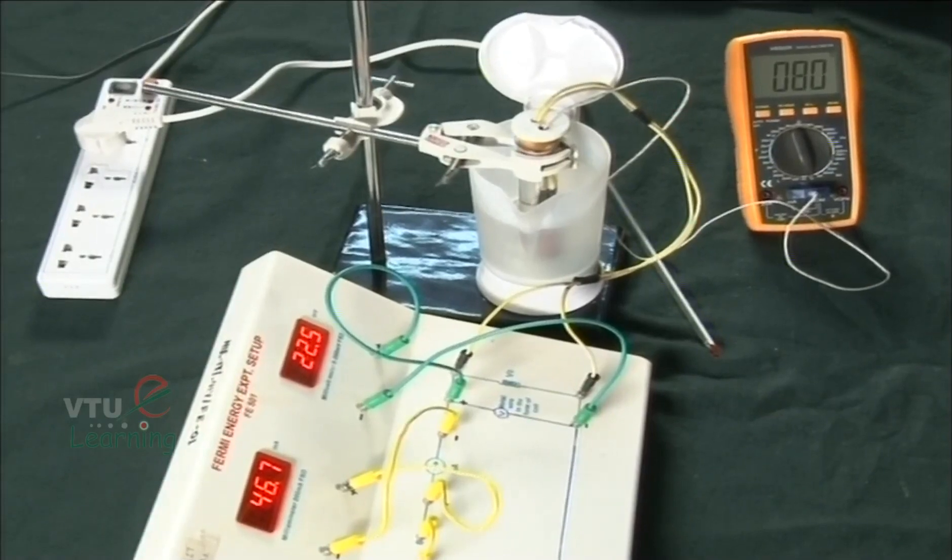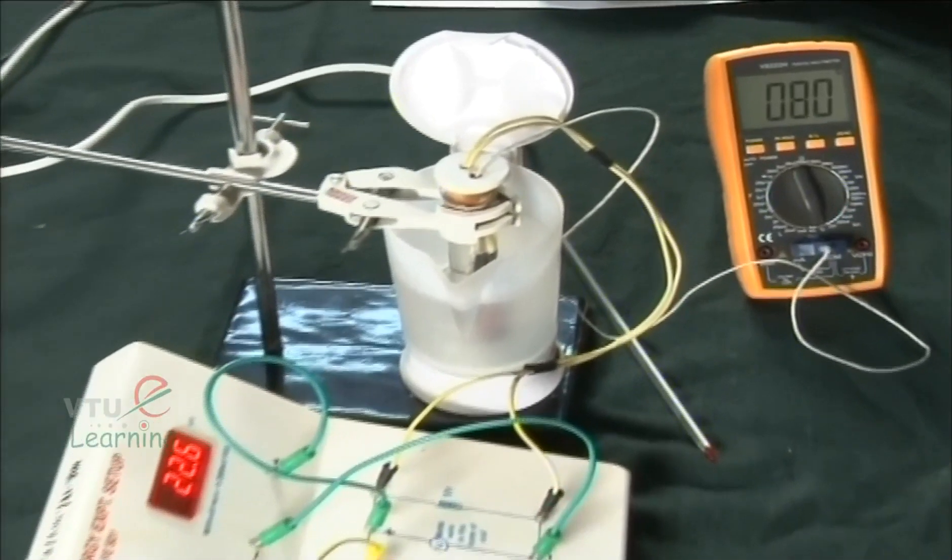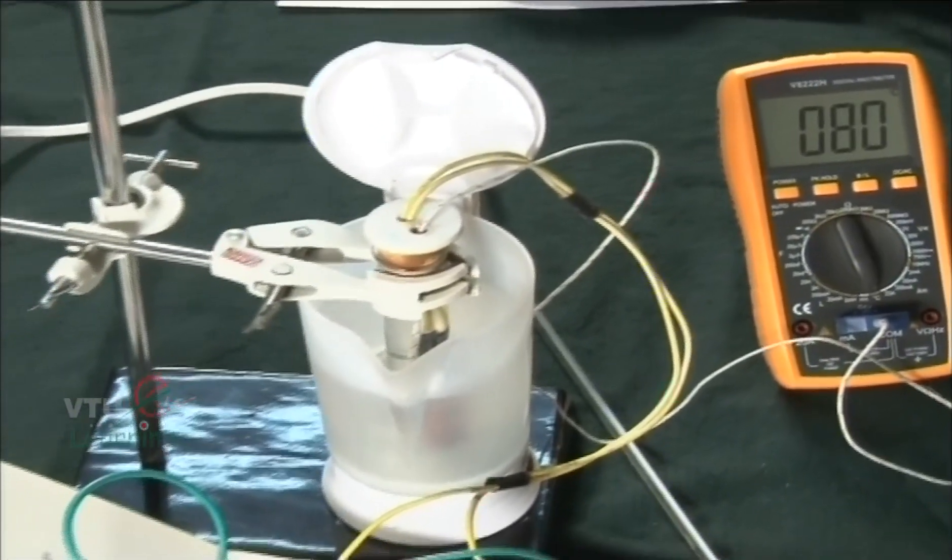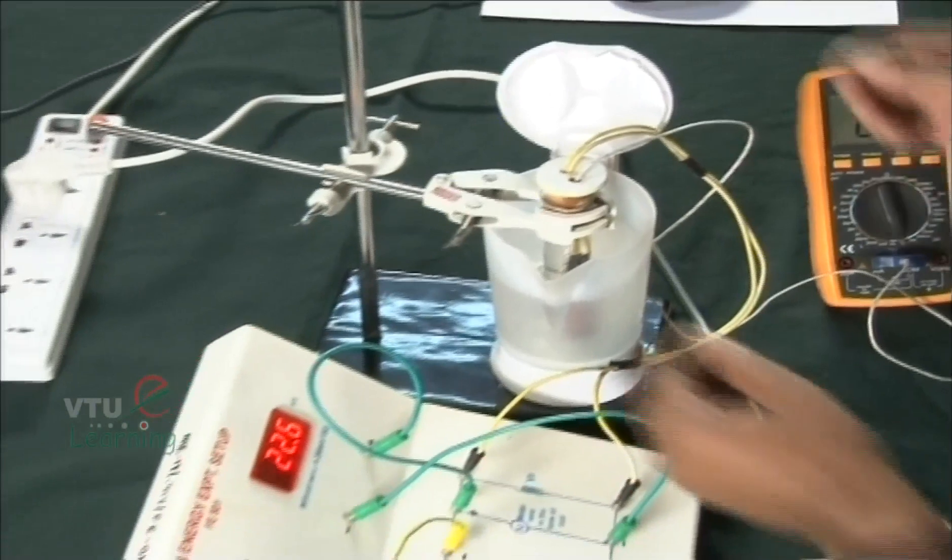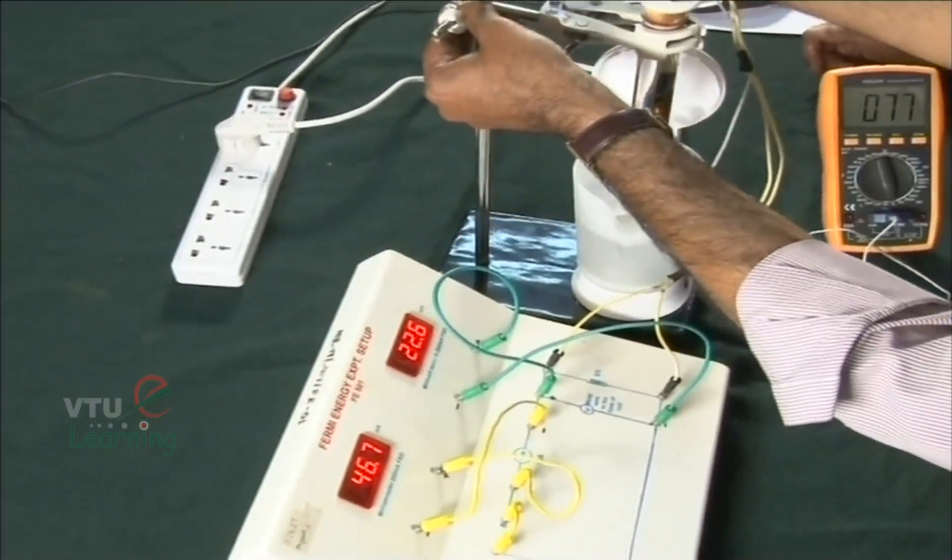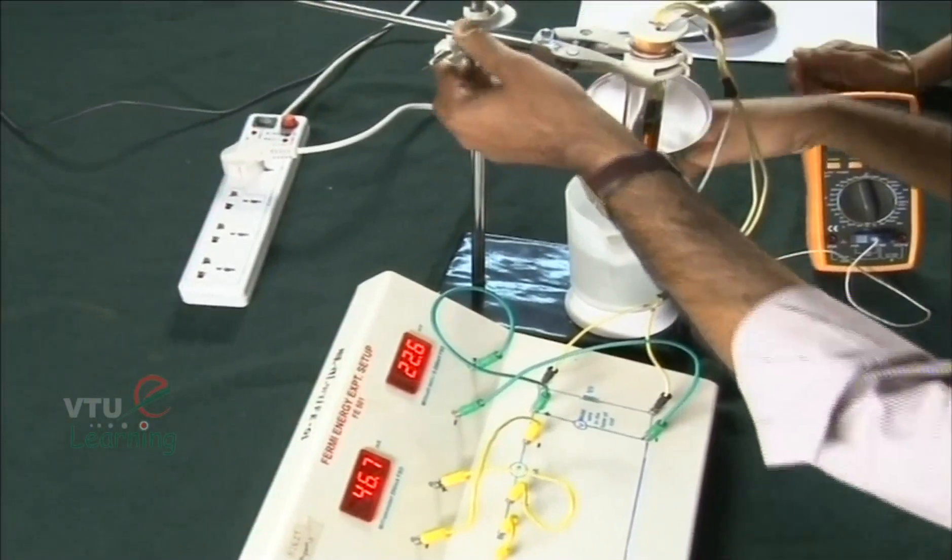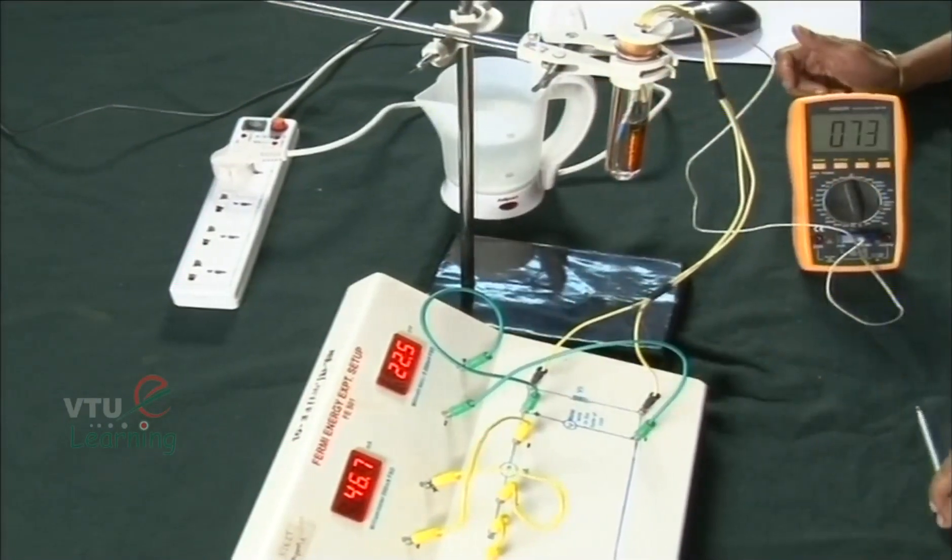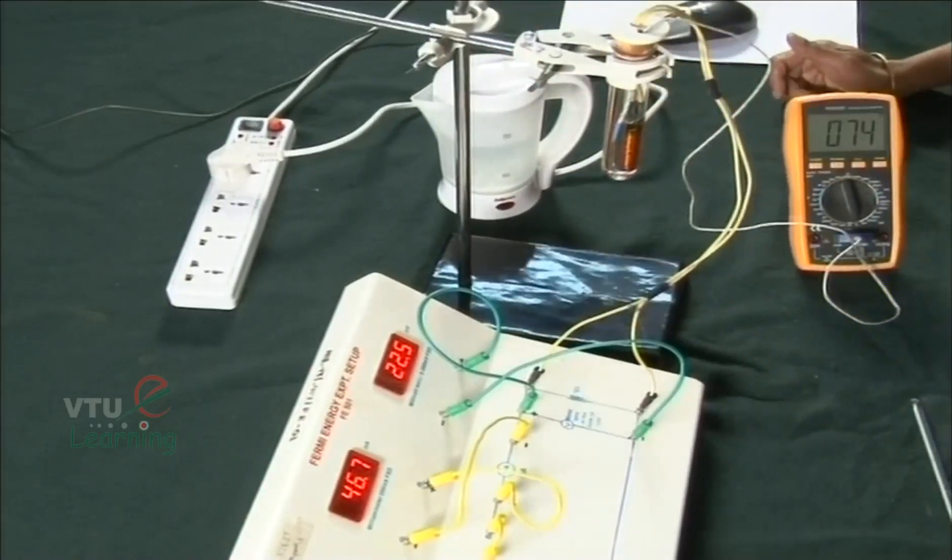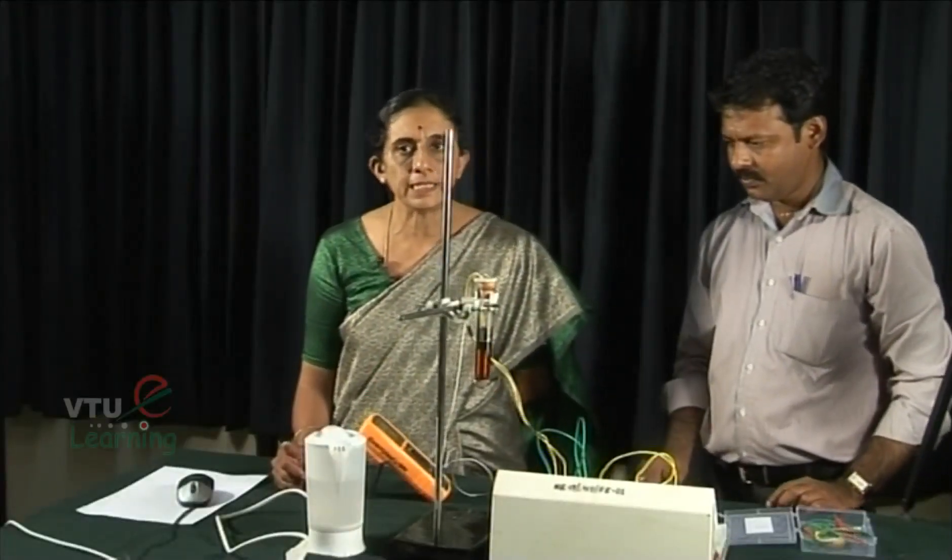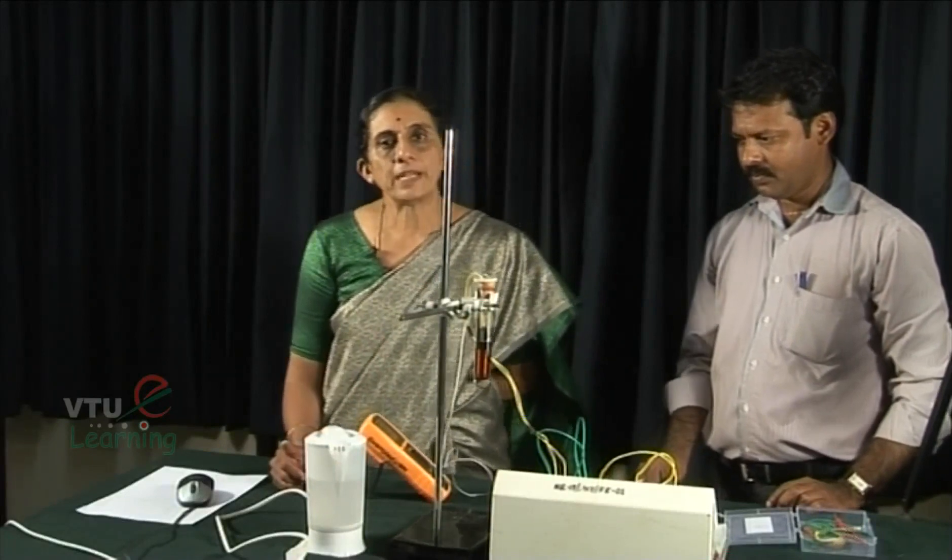Now we have reached 80 degrees centigrade. The readings are 46.7 milliamperes and 22.6 millivolt. We record these readings and we can lift up the coil to higher level away from the hot water bath so that the coil gets cooled faster as per Newton's law of cooling. If the difference in temperature between the hot body and the surroundings is greater, cooling will be faster.